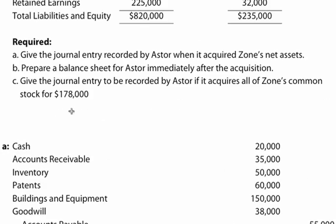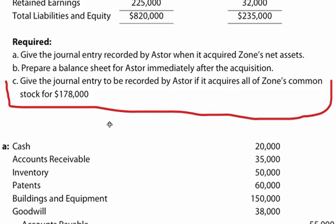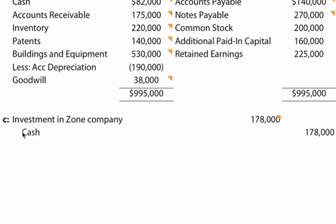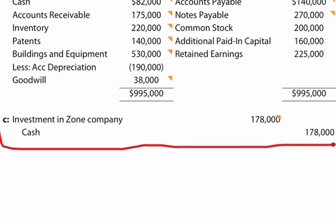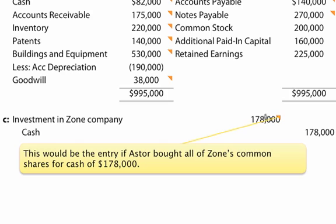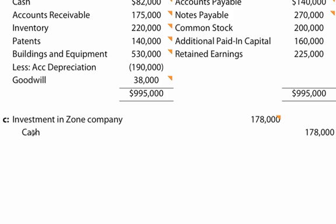For the last part, Part C: give the journal entry to be recorded by Aster if it acquires all of Zone's common stock for $178,000. That journal entry would be to debit Investment in Zone Company — this would be the entry if Aster bought all of Zone's common shares — and the credit would be to cash for $178,000.